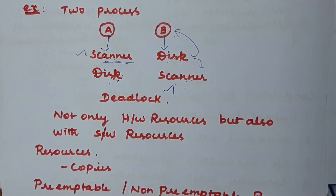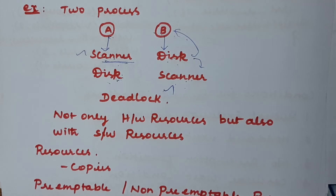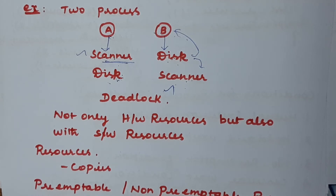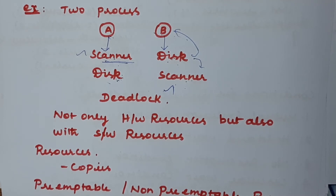In the case of non-shareable resources, if a process requests a resource and cannot receive it at the time of requesting, that can lead to deadlock. If it cannot recover, that is deadlock. If it is waiting and may get the resource after a long time, that is starvation. The difference: starvation means the process will get the resource at some point but doesn't know when, so it waits indefinitely. Deadlock means it will never get that resource at all.